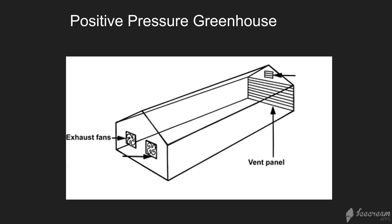Another option is a positive pressure greenhouse — just the reverse. It creates a higher pressure inside the greenhouse than outside. You can also add a fogging system to increase cooling.